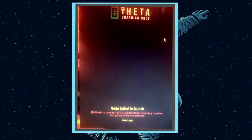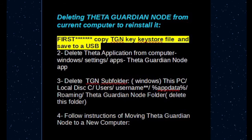Special note: if you get the message 'Node failed to launch — fatal: failed to load or create key: could not decrypt key with given password' when launching your new node, that means when you installed the Theta Guardian app on your new computer, you entered a different password from your original node. You need to keep the passwords the same. Make sure you know the password to your Theta Guardian Node that you're trying to move, or you will get this message.